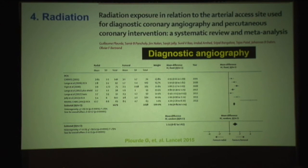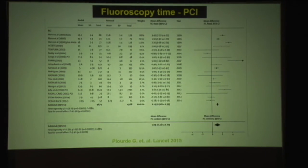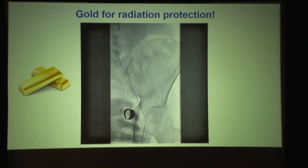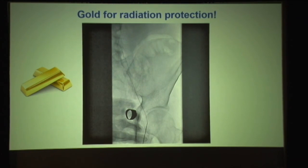Reason four: radiation. Data — Dr. Rao was part of this — showing that consistently there is increasing radiation for the patient, both for diagnostic and PCI cases with radial. And in the small print: the operator received 50% more radiation if they didn't use extra protection. So do you want to get cancer? Now, Dr. Banerjee has the advantage of gold shielding, but there are still uncovered parts.